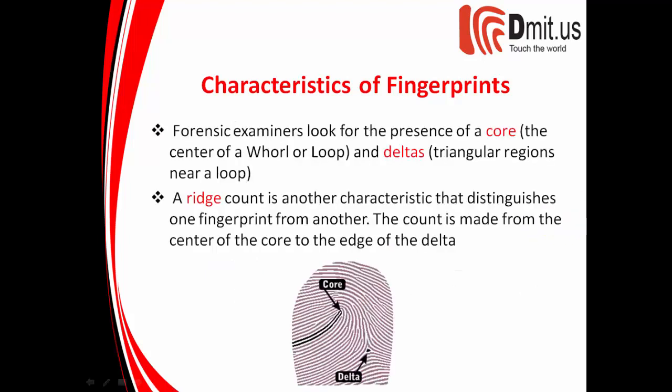Here's another thing that forensic examiners are going to look for — the presence of the core. It's the center of a whorl or a loop. The deltas are usually near the loop, but the core itself enables them to perform another type of quantitative analysis called a ridge count. The ridge count is another characteristic that distinguishes one fingerprint from another. You start at the center of the core and count the number of ridges until you reach the delta, and that's going to be fairly unique from person to person.